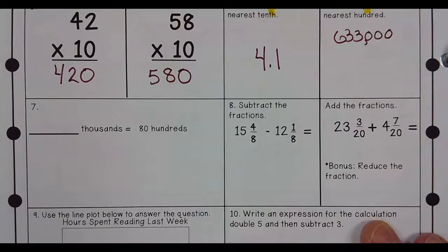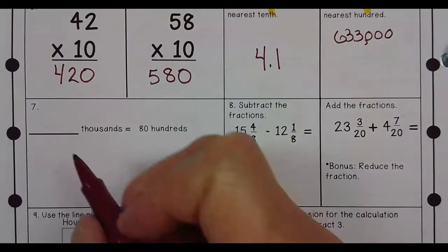How many thousands is 80 hundreds? It would be 8,000 is 80 hundreds.